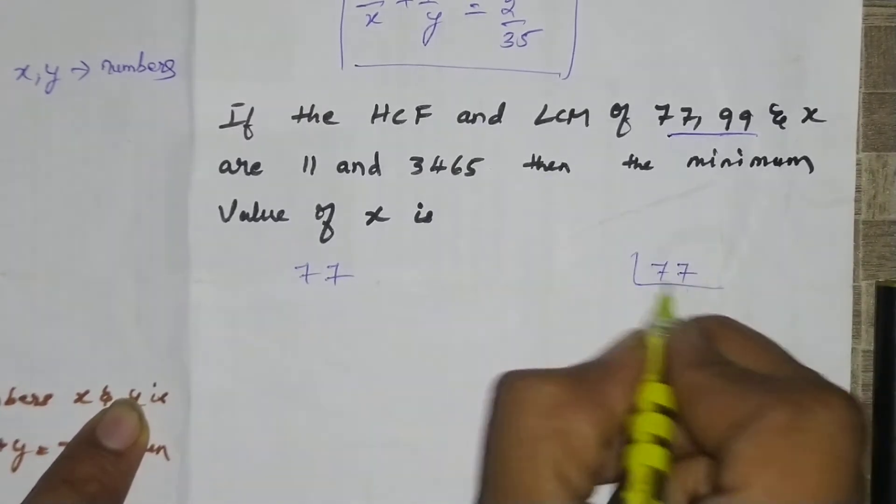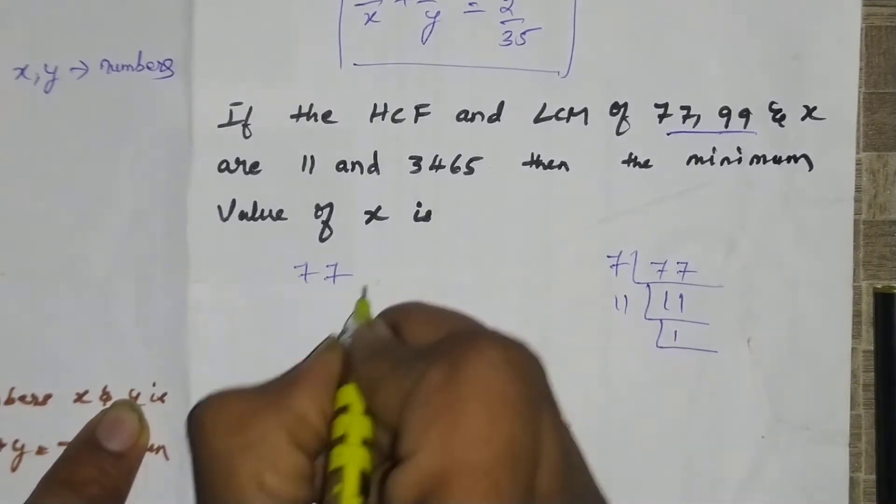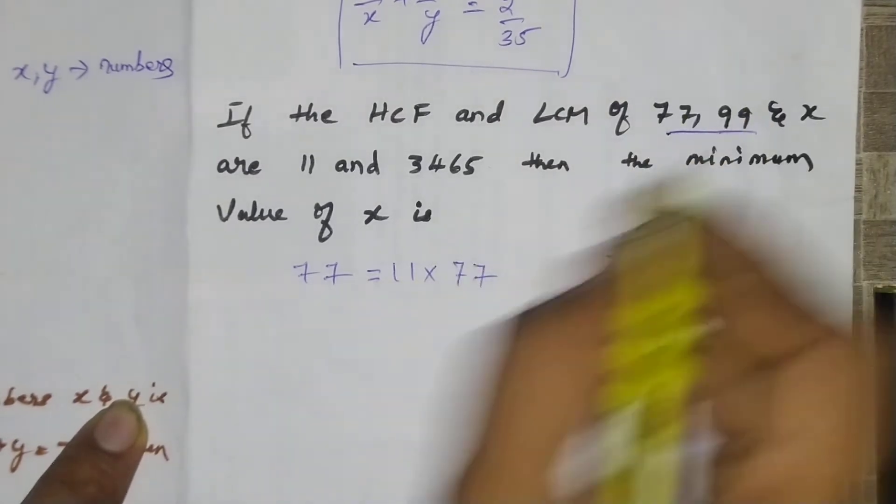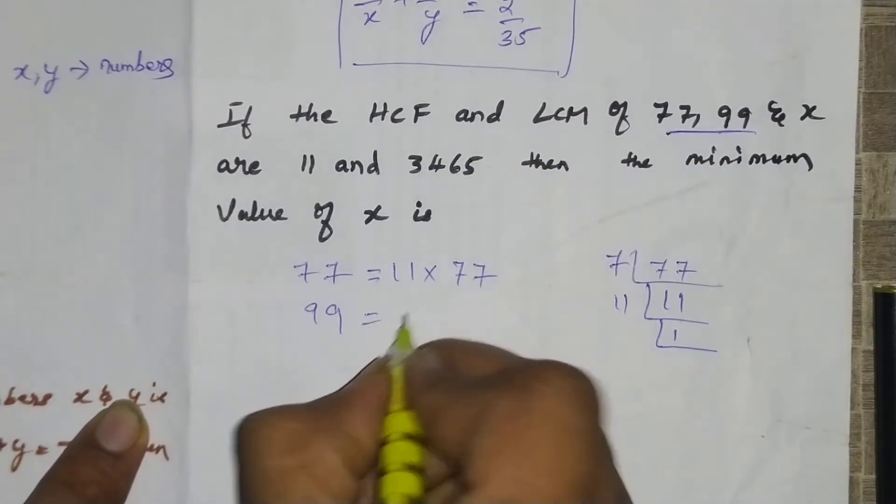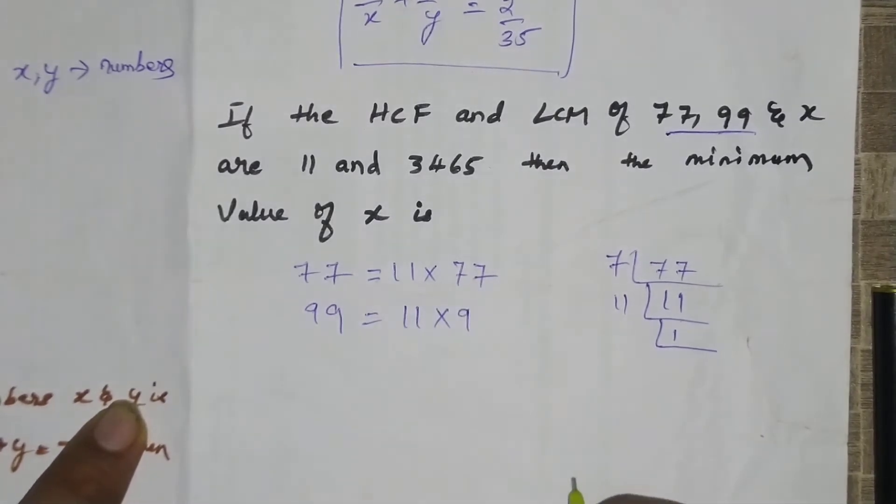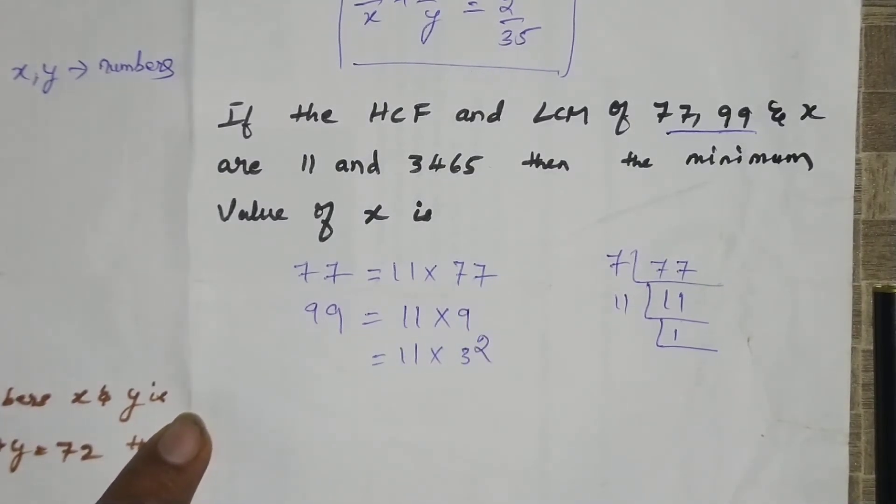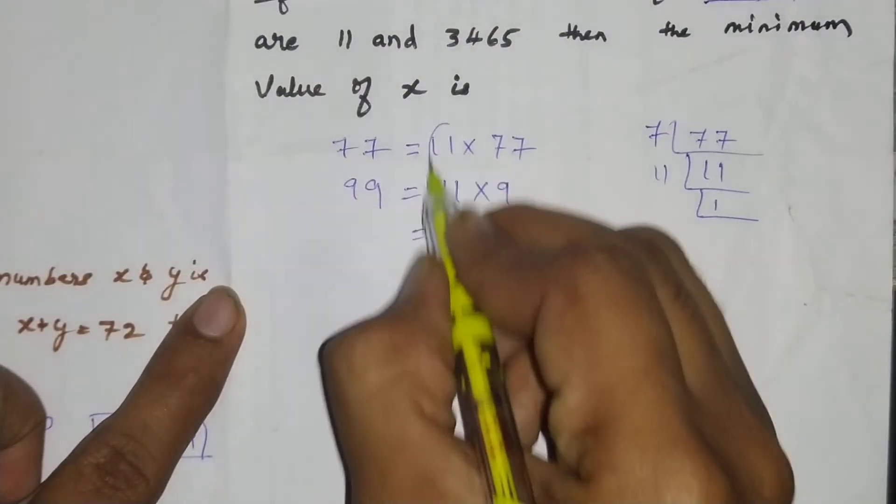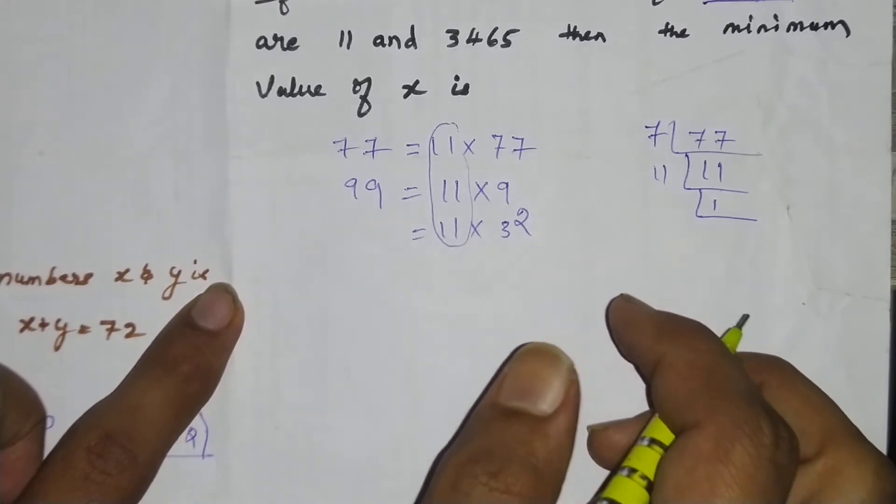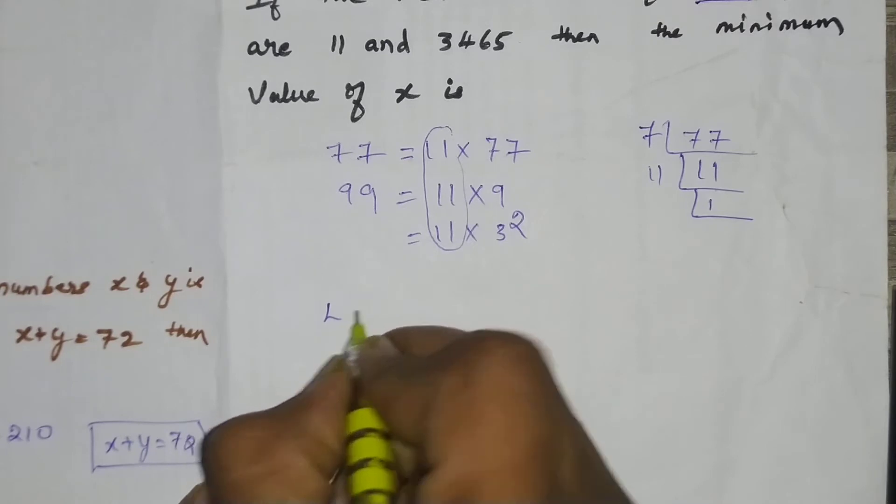In 11 table, 77 equals 11 times 7. Similarly, 99 in 11 table goes 11 times 9, that is 11 times 3 squared. So 11 should be a multiple of x. Therefore, the LCM of three numbers will be calculated.